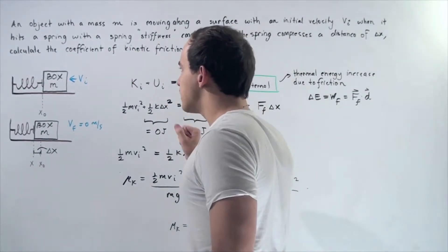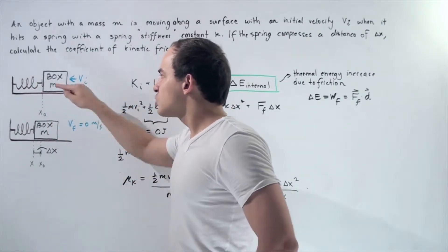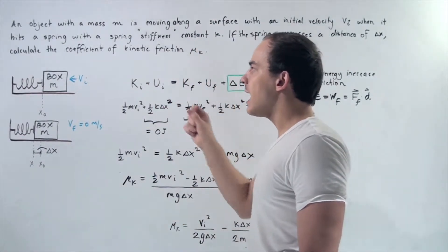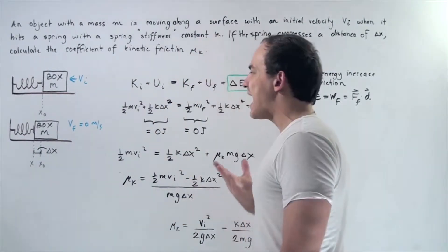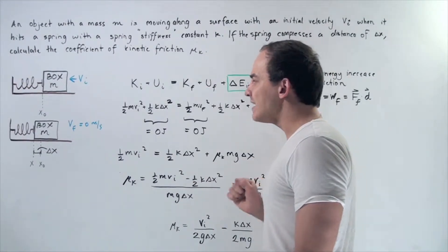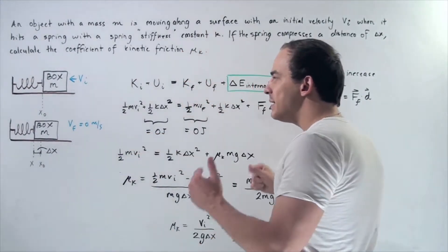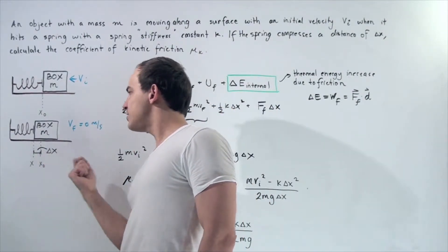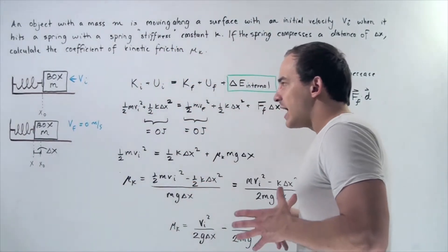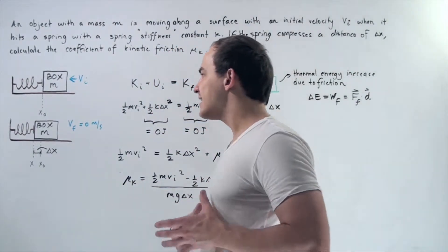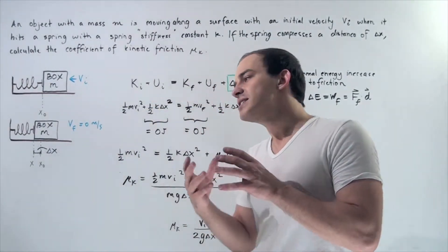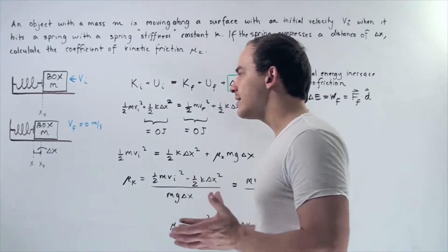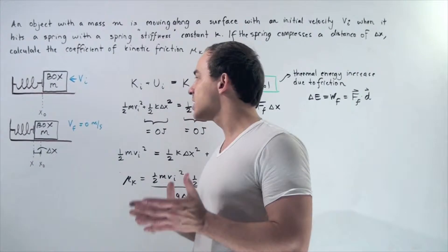In our initial system, our box just hits the spring, so the spring is not yet compressed, and the box is moving with initial velocity v_i and it has a mass. In the final system, it has a velocity v_f of zero meters per second because it compressed the spring a displacement of change in x. At the same time, some of that kinetic energy has become elastic potential energy, and some has dissipated as thermal energy due to friction.